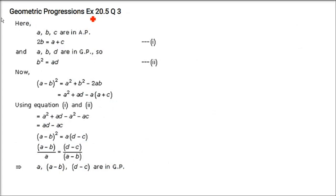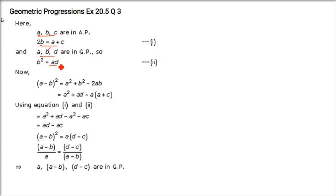If ABC are in AP and ABD are in GP, then we have to prove that A, A−B, and D−C are in GP. First: ABC in AP means 2B = A + C. And when ABD are in GP, B² = AD. These two things you already know.